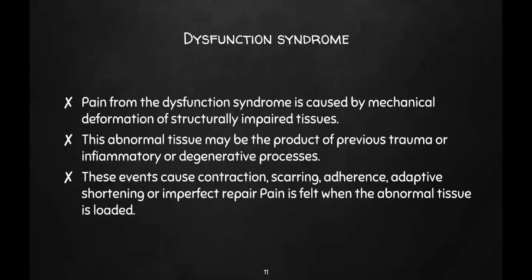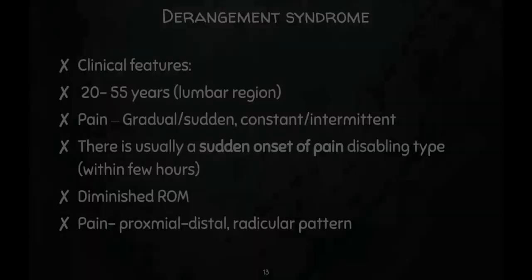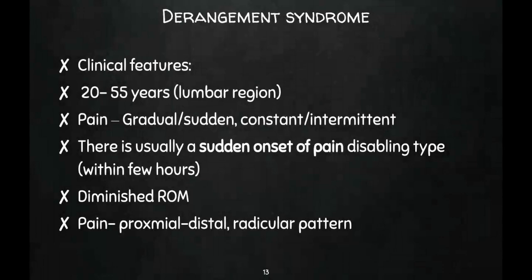The derangement syndrome is the most common of the three syndromes. Pain is felt immediately or eventually when there is an anatomical disruption or displacement of the intervertebral segment. The mechanism involves asymmetrical or unequal loading of the spine, or disc protrusion causing pain. Clinical features: patient can be anywhere between 20 to 55 years of age, pain can be gradual or sudden, constant or intermittent, usually sudden onset and disabling. Diminished range of motion is seen, and pain can travel from proximal to distal or present in a radicular pattern.